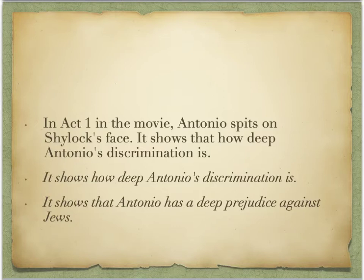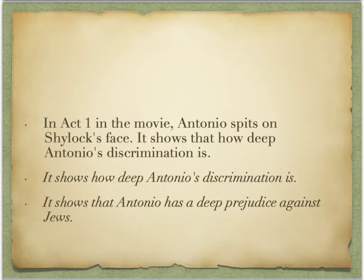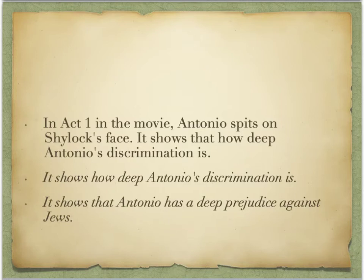The error primarily is in this area. We don't usually use 'that' and 'how' in a sentence — we would use one or the other, and each requires a different structure. So if we're going to use 'how,' we would say 'it shows how deep Antonio's discrimination is.' Or if we're going to use 'that,' then we need the subject following 'that' and a complete sentence. So it shows that Antonio has a deep prejudice — I changed it to 'prejudice' because we don't usually say 'have' with 'discrimination.' So: it shows that Antonio has a deep prejudice against Jews.